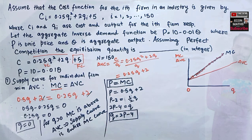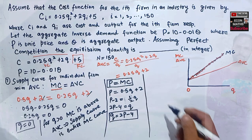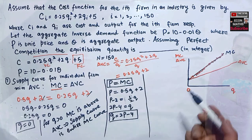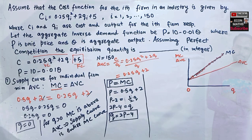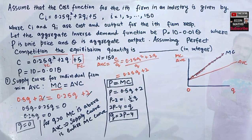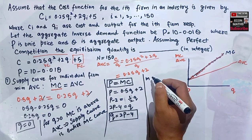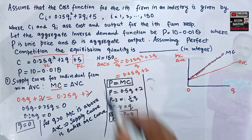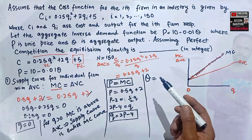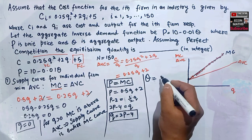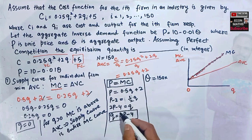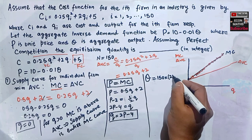We have the individual supply curve, but we need the market supply curve. The market supply curve is the summation of individual firms' supply curves. Since all firms are identical, the market supply Q = 150 × (individual firm supply) = 150 × (2P − 4).